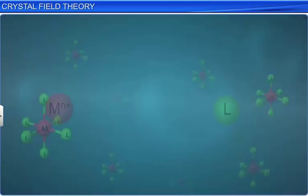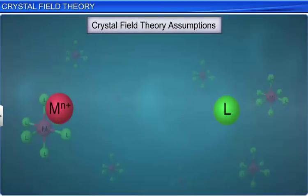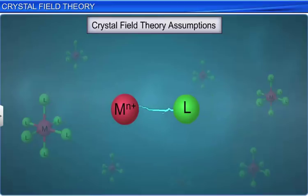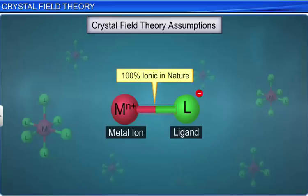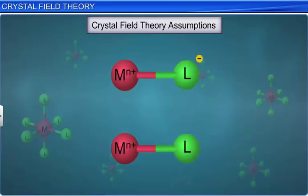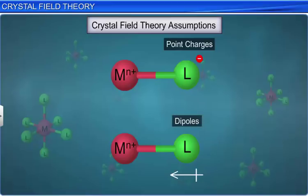The crystal field theory is based on certain assumptions. The interaction between the metal ion and the ligand is purely electrostatic; that is, the metal-ligand bonds are 100% ionic in nature. Negative ligands are treated as point charges and neutral ligands are treated as dipoles. Thus, the bonding in the complex may be an ion-ion interaction or an ion-dipole interaction.